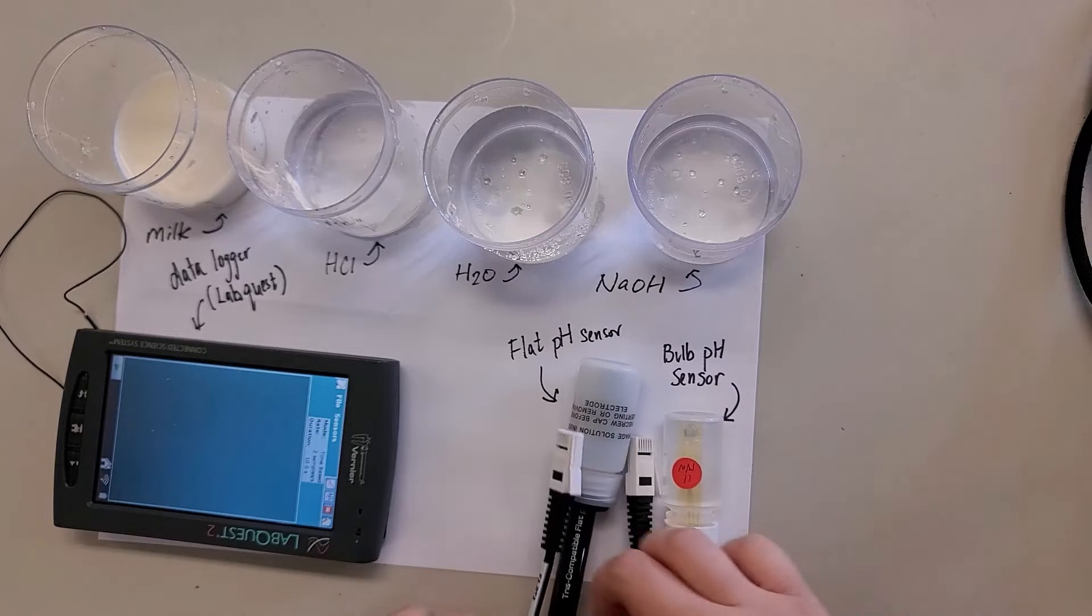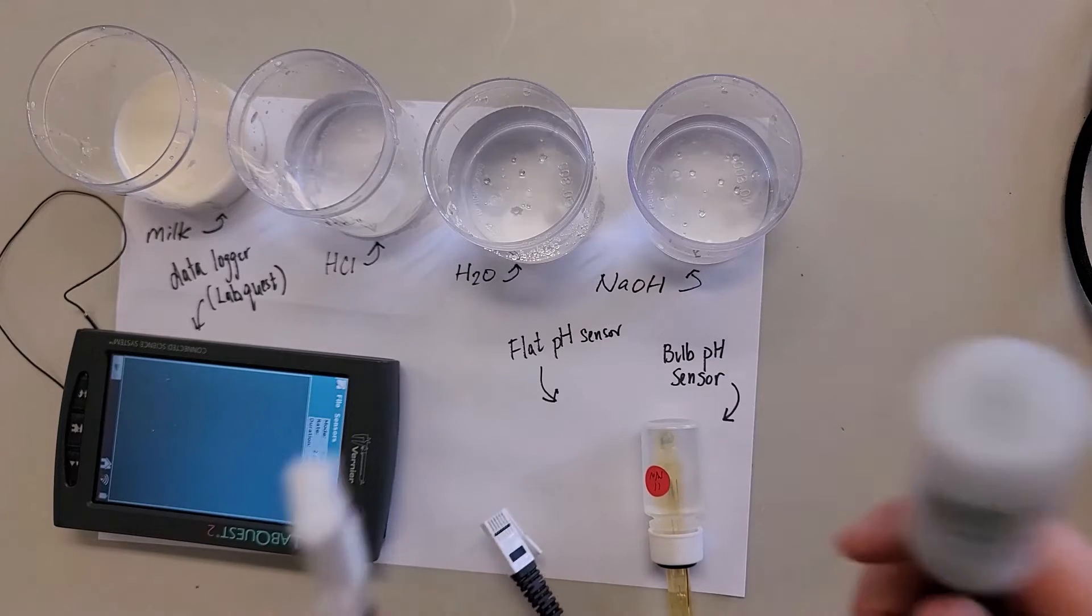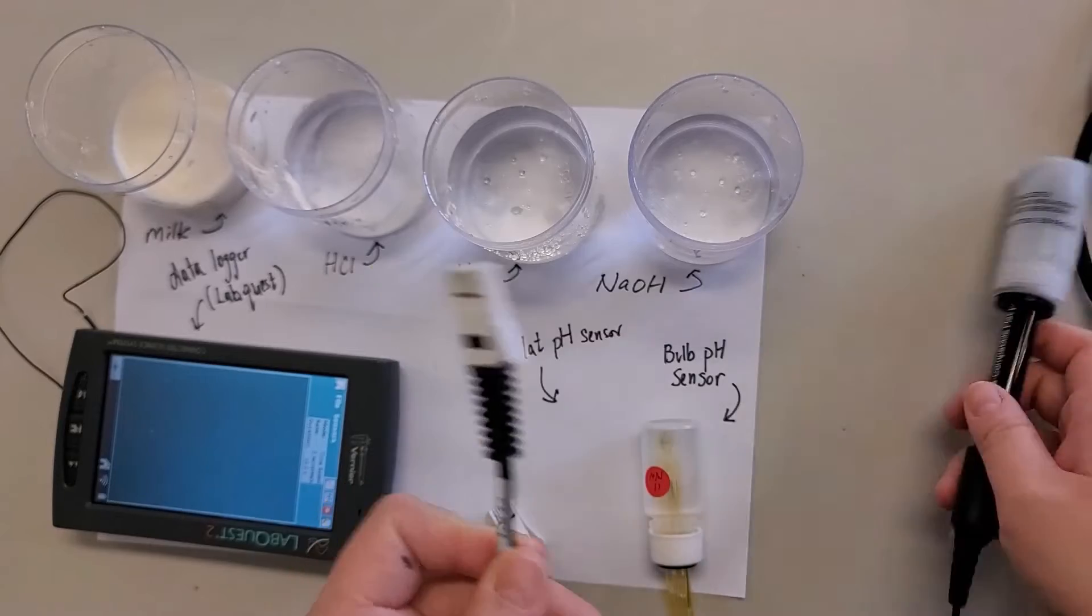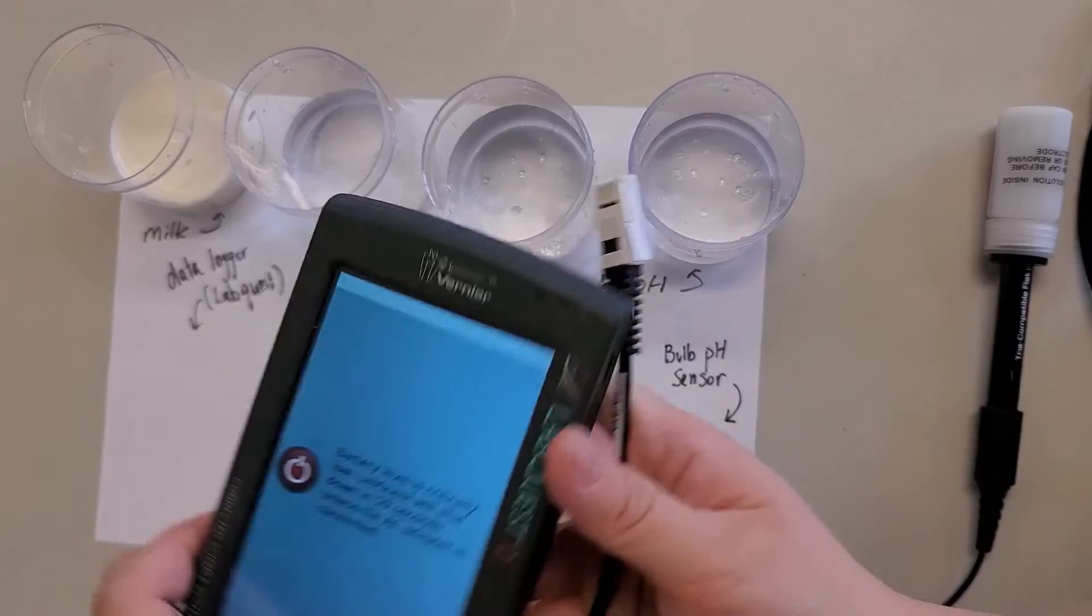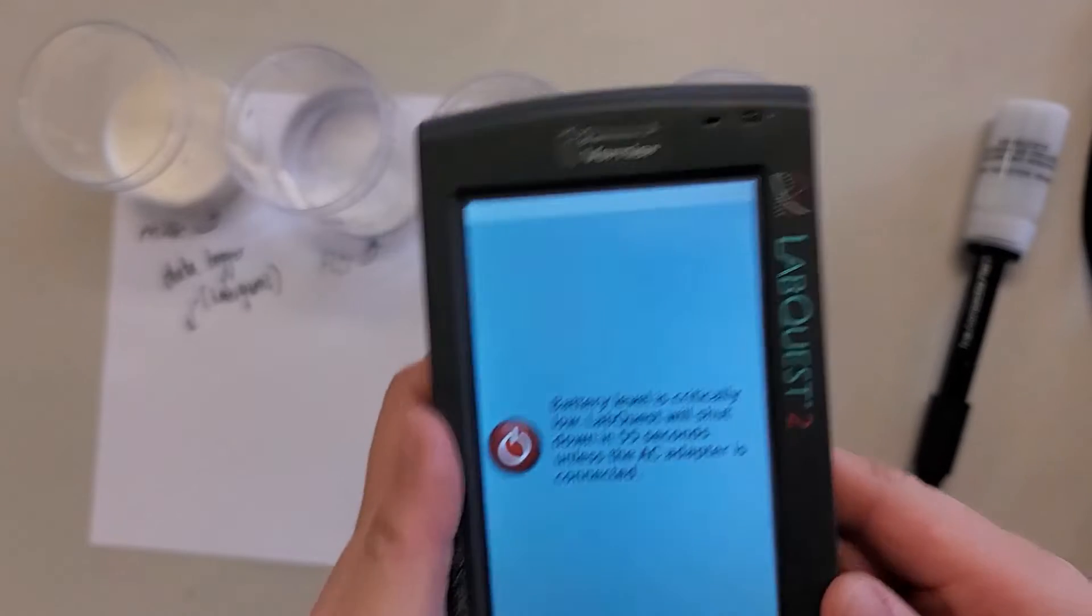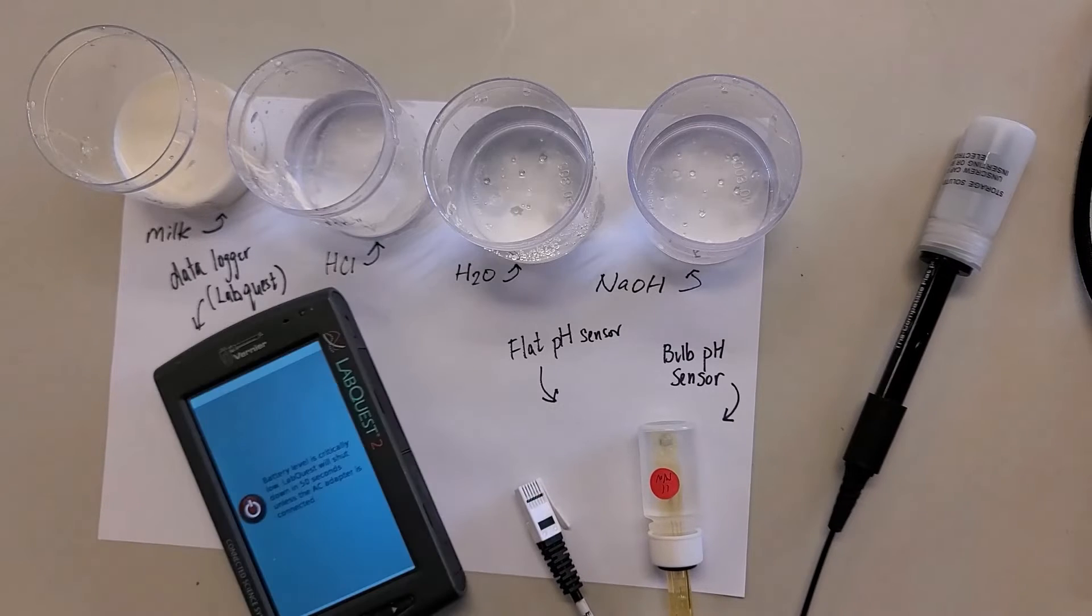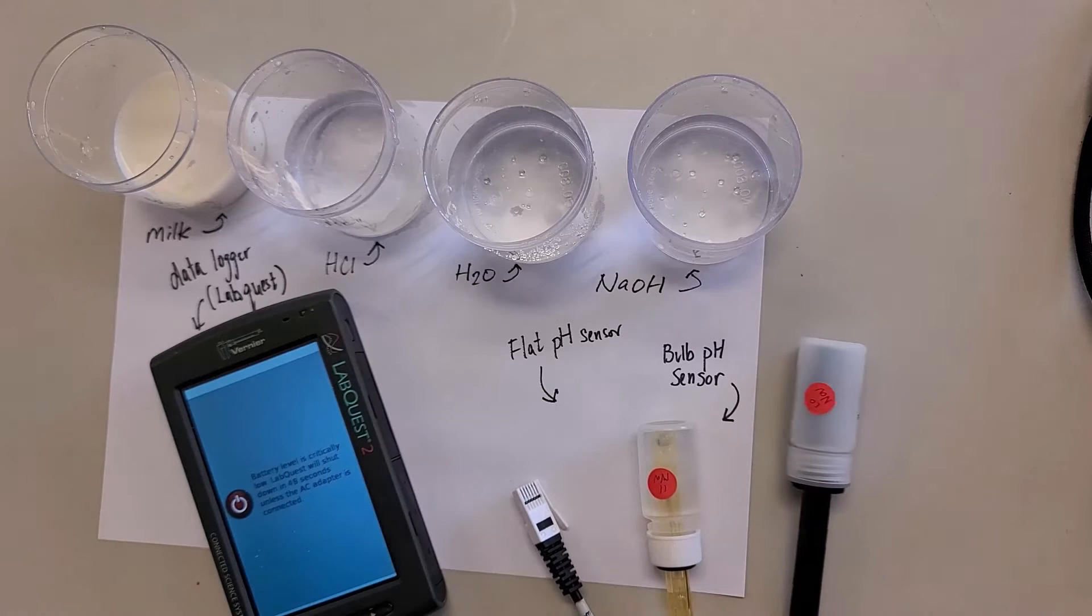So let's get started. Let's try the milk one first. Turn on the sensor. Oh, battery low. So I need to make sure again - make sure you charge it when you use it or after you finish using it, so then the next person doesn't have to charge it.